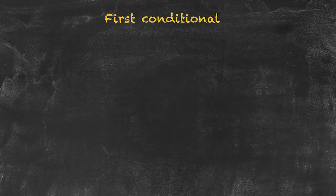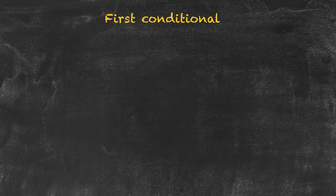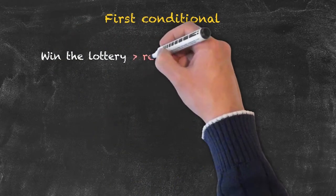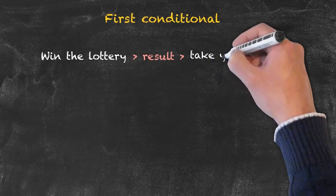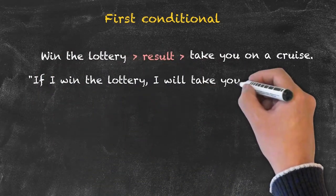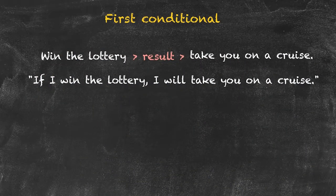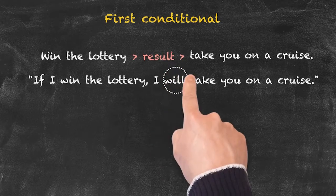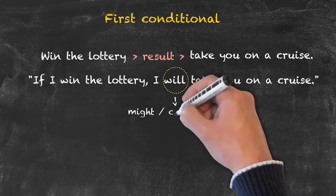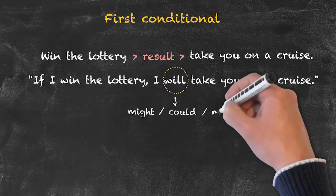Let's now take a look at another conditional — the first conditional. A typical situation the first conditional would be used for: winning the lottery, the result of which might be to take somebody on a cruise. So a sentence for this would be: if I win the lottery, I will take you on a cruise. What other words could we use instead of 'will'? I might take you on a cruise; I could take you on a cruise; I may take you on a cruise.